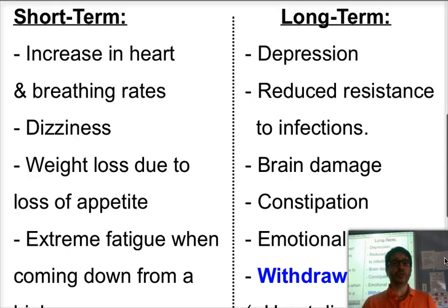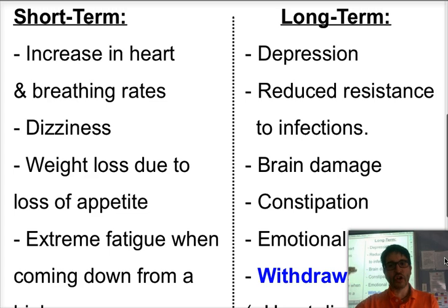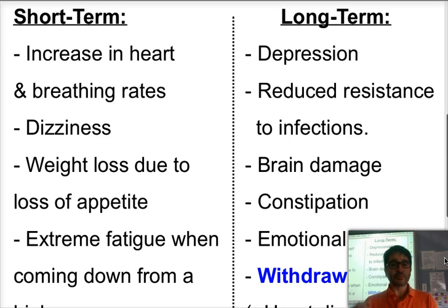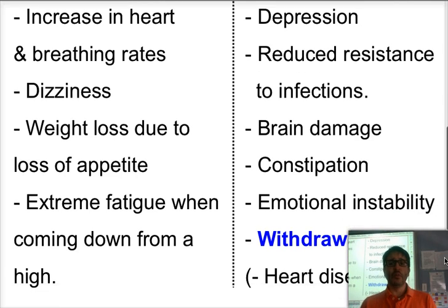When looking at long-term use of amphetamines, because your brain gets used to the high of having a lot of energy and you develop tolerance — meaning it takes a greater amount of drug each time — you can get feelings of clinical or psychological depression. You'll have reduced resistance to infections because your body is using its resources for making energy rather than building the immune system. It can cause brain damage, constipation, emotional instability, and because it causes dependence and addiction, you'll always have problems with withdrawal. It can also cause heart disease.